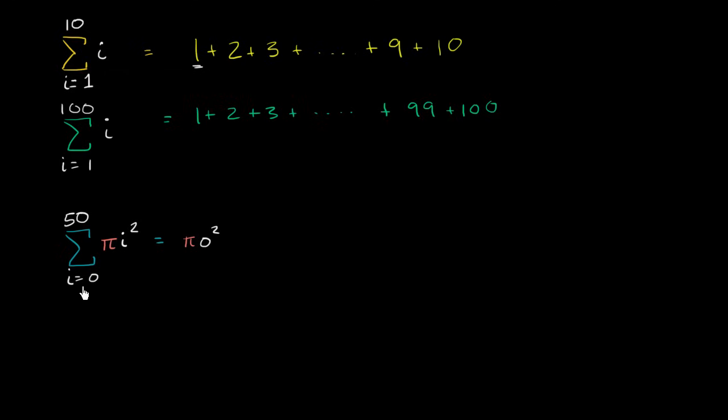Then we increase our i. And we make sure that we haven't hit this, that our i isn't already this top boundary right over here or this top value. So now we set i equals 1. Pi times 1 squared. So plus pi times 1 squared.